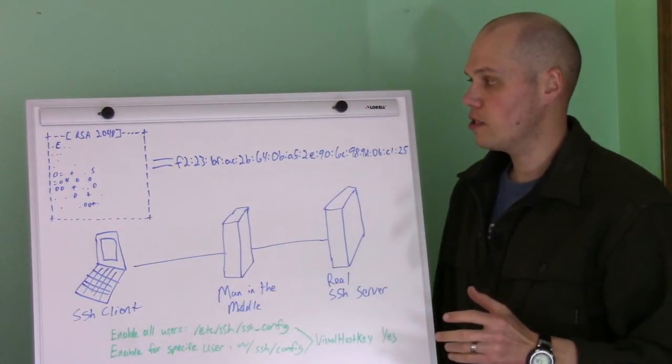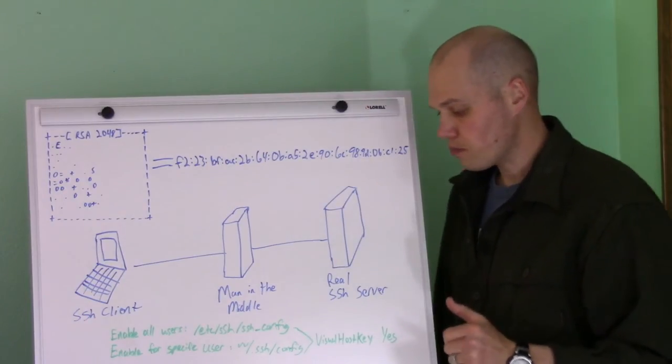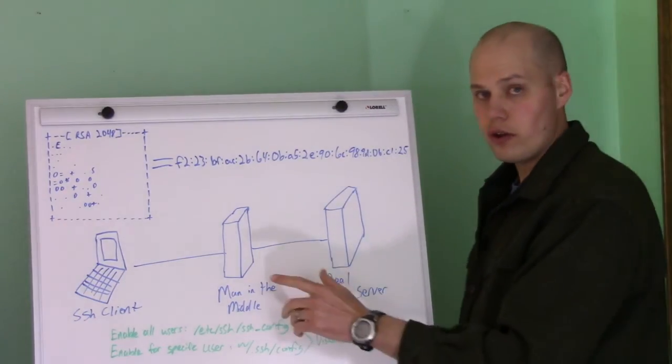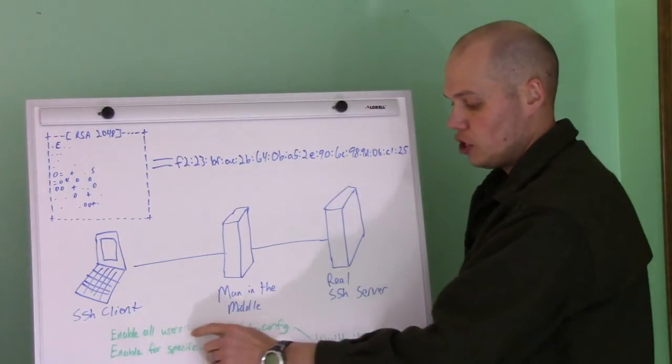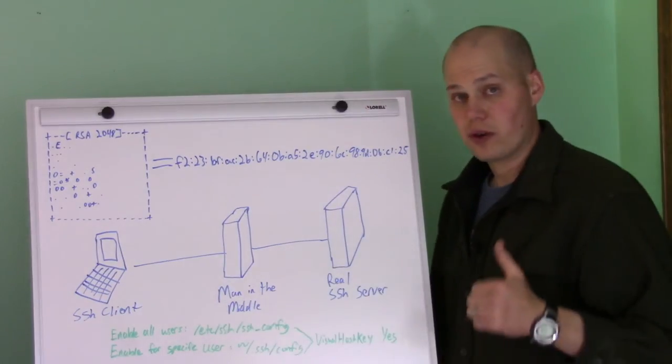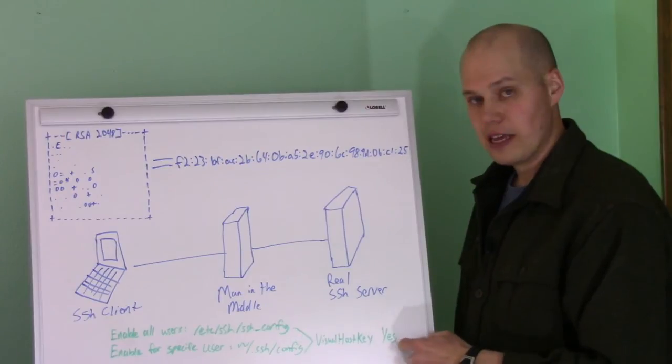So it's kind of a cool technology. If you want to enable it, what you do, if you want to enable it for all users, and this would be over on your SSH client here, is you would edit your /etc/ssh/ssh_config file, and you'd add the option VisualHostKey yes.